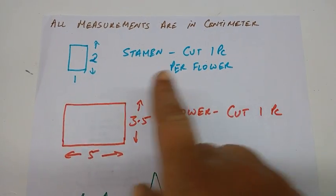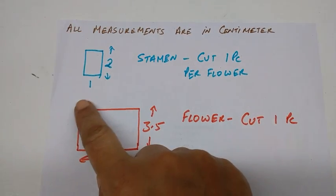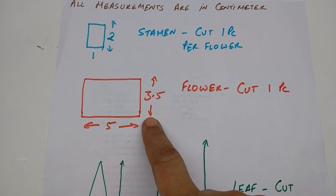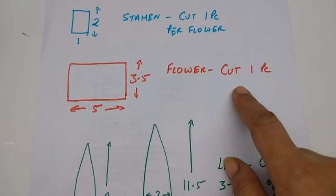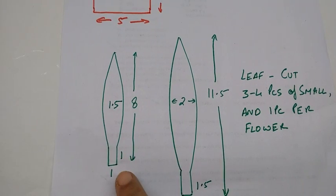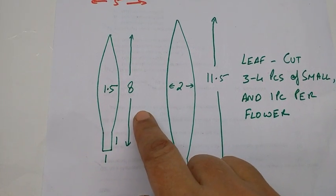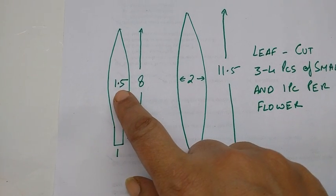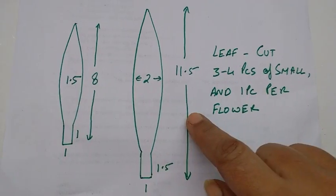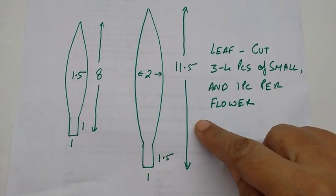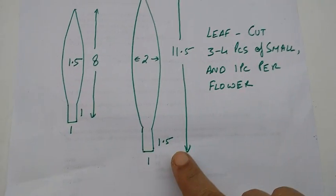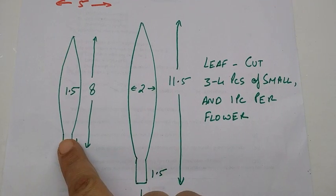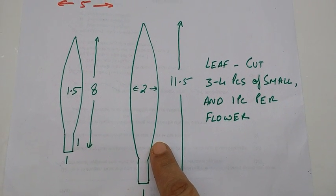All the measurements are in centimeters. For the stamen: 2cm high and 1cm wide, cut one piece per flower. For the flower: 3.5cm high and 5cm wide, cut one piece. The small leaf is 8cm long and 1.5cm wide. The bigger leaf is 11.5cm high and 2cm wide, the stem is 1.5 by 1cm. We need to cut three to four pieces of the small leaf and one piece at least of the big leaf per flower.